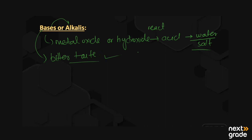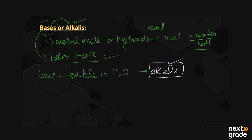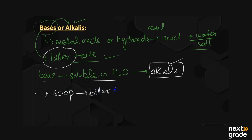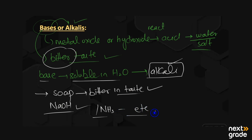Water-soluble bases are known as alkalis. Why are they called alkalis? When a base is soluble in water, it is known as an alkali — that is why bases soluble in water are called alkalis. Bases mainly have a bitter taste. For example, if you taste soap it has a bitter taste. Another example is sodium hydroxide (NaOH), which is a base. We also have baking soda and ammonia (NH3) — these are examples of bases or alkalis.